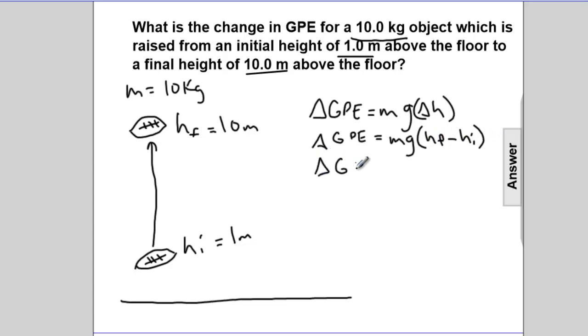So the change in GPE, now we can sub in numbers, will be its mass, 10 kgs, times gravity, 9.8 meters per second squared, times the change in height. HF, we're running out of room so I'll just do the computation without putting the numbers in, HF is 10, minus 1 is 9 meters.